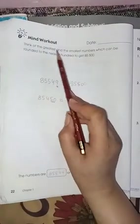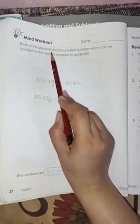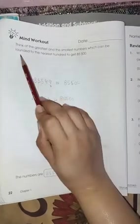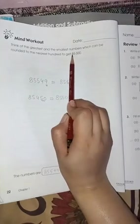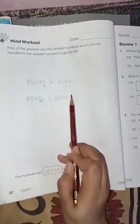Next is page number 22. Here you have to think of the greatest and the smallest number which can be rounded to the nearest 85,500. You can see I have written the number here and here.